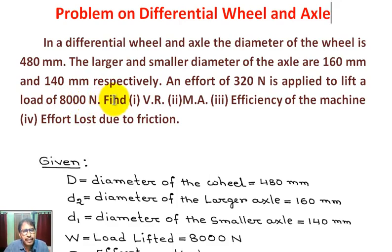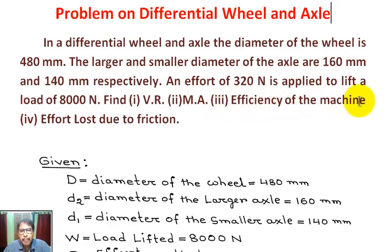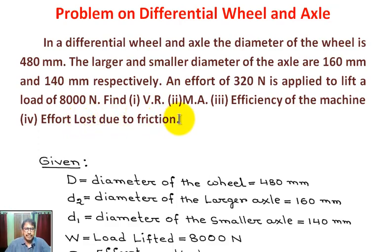Find: number one, velocity ratio. Number two, mechanical advantage. Number three, efficiency of the machine. Number four, effort lost due to friction.